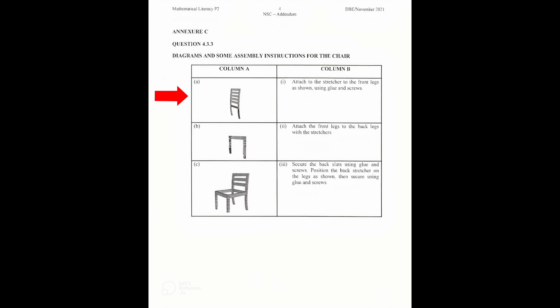In annexure C, picture A shows the back slats, the back stretcher and back legs. Picture B shows the front stretcher and front legs. And picture C shows the chair without a seat. When we compare column A with column B, the best match is A corresponds with 3 in column B: secure the back slats using glue and screws.